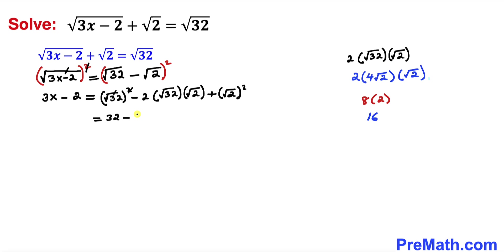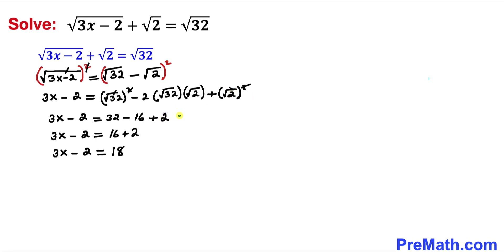I'm going to replace that whole thing with its simplified form of 16. Then square root of 32 whole squared gives us 32, plus square root of 2 whole squared gives us 2. So on the right hand side: 32 minus 16 plus 2 equals 18.